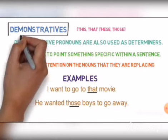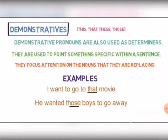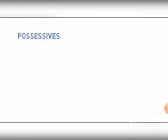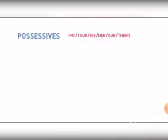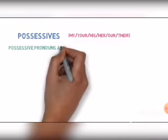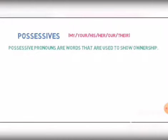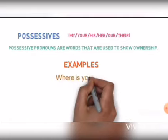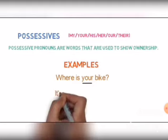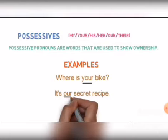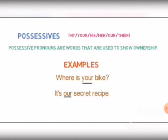Now let's look into the next category: possessives. Possessives are words like my, your, his, her, our, their. Possessive pronouns are words that are used to show ownership. For example, 'Where is your bike?' Here we have used 'your' to point out the bike which belongs to you. Another example: 'It's our secret.' Here we have used 'our' to point out the secret which belongs to us. As possessives determine the ownership of a noun, they come in the category of determiners.